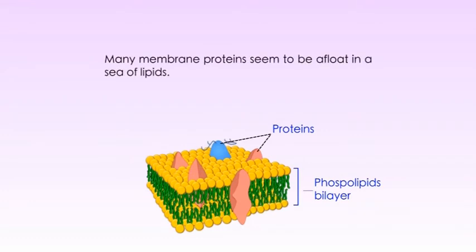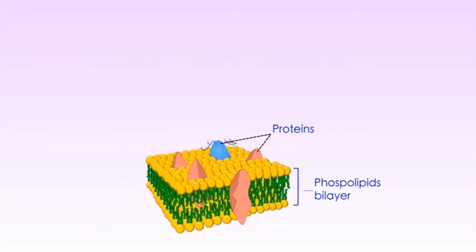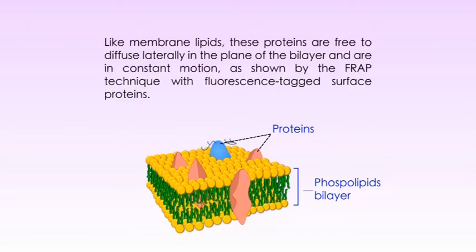Many membrane proteins seem to be afloat in a sea of lipids. Like membrane lipids, these proteins are free to diffuse laterally in the plane of the bilayer and are in constant motion, as shown by the FRAP technique with fluorescence-tagged surface proteins. Some membrane proteins associate to form large aggregates or patches on the surface of a cell or organelle, like acetylcholine receptors that form dense patches on neuron plasma membranes at synapses. Other membrane proteins are anchored to internal structures that prevent their free diffusion, like glycophorin, tethered to spectrin, a filamentous cytoskeletal protein in the RBC membrane.